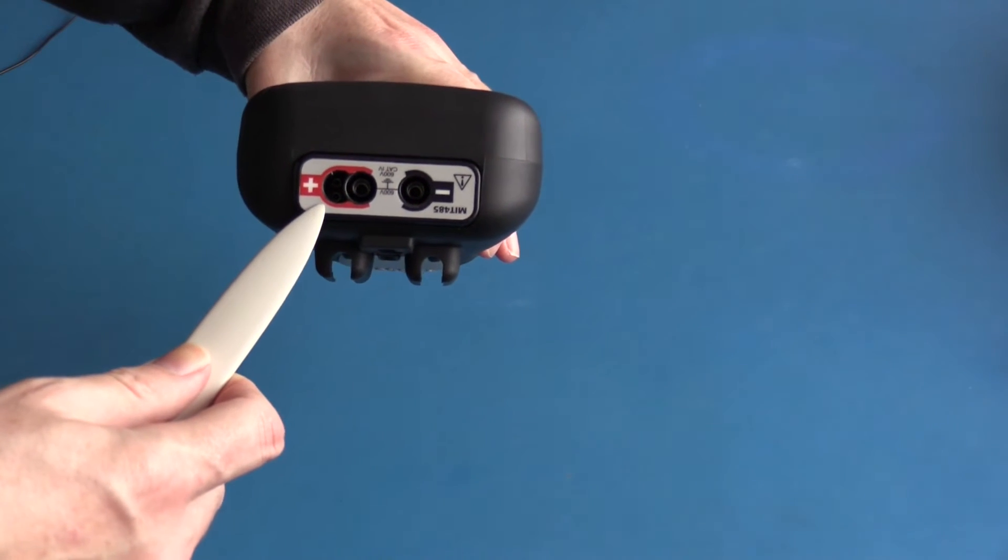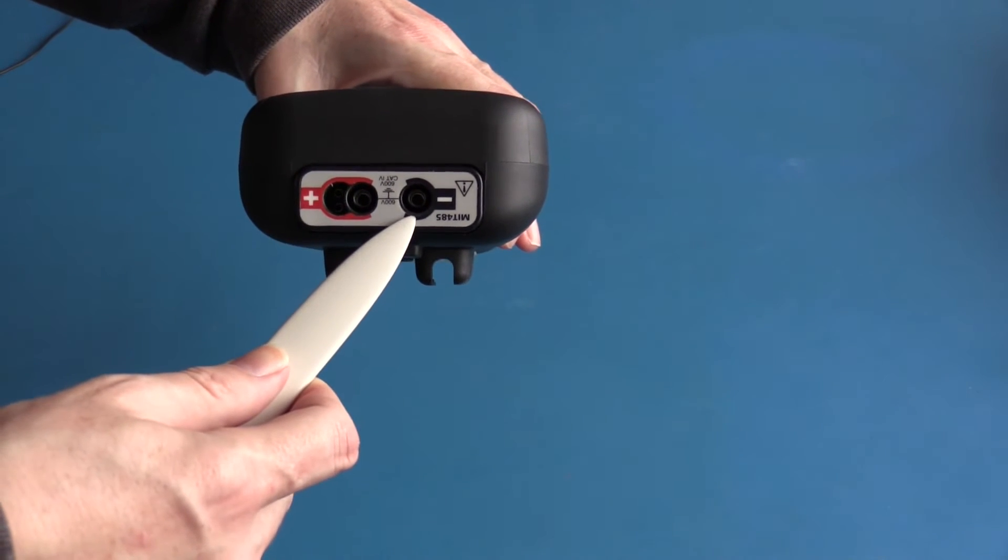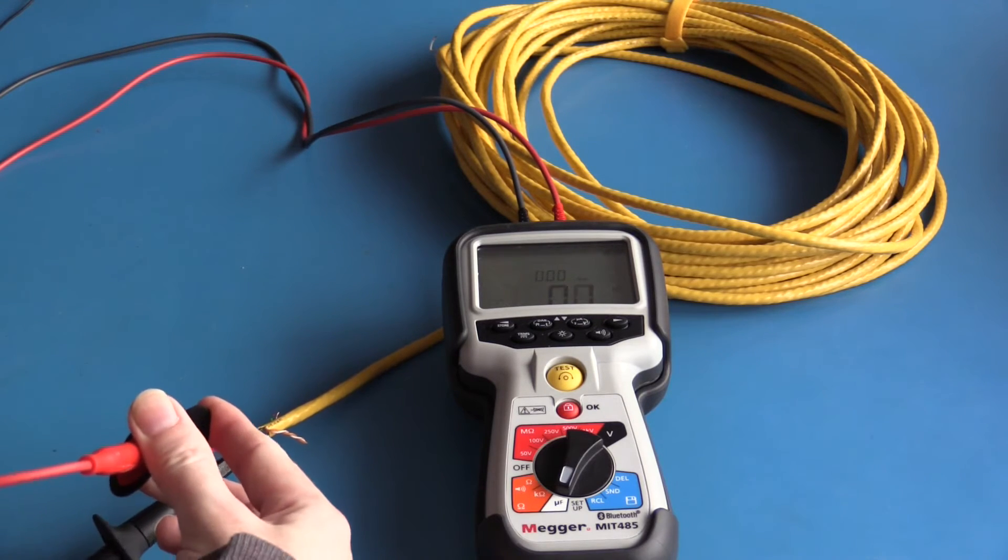Top of the meter includes your positive input jack, the remote probe input jack, as well as your common jack. Using the capacitance testing measurement function, I can estimate the length of this cable.